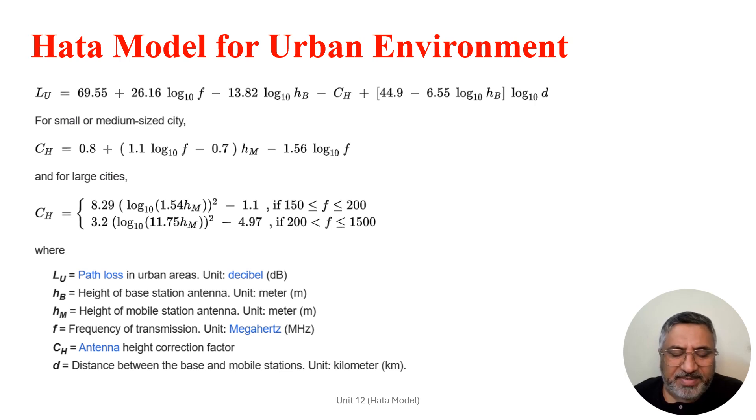F can be defined as the frequency of transmission with units in megahertz, not gigahertz. CH is defined as antenna height correction factor. D is the distance between base and mobile station, with units in kilometers.